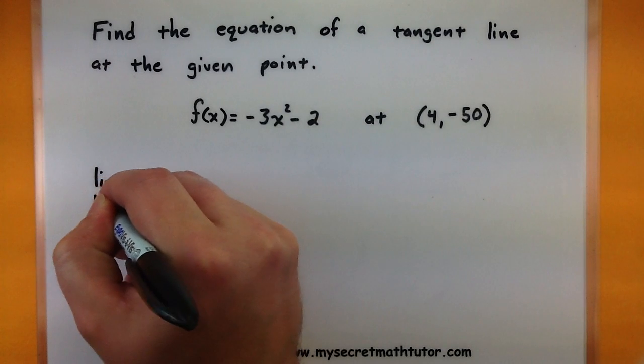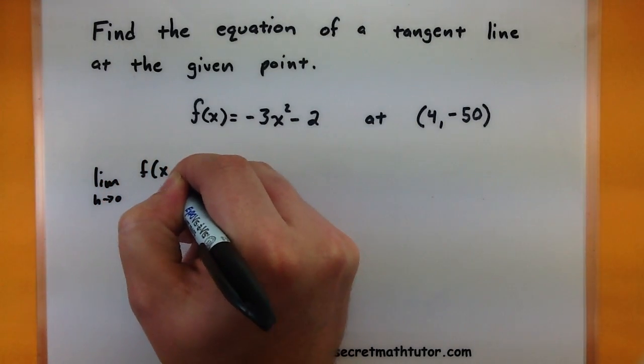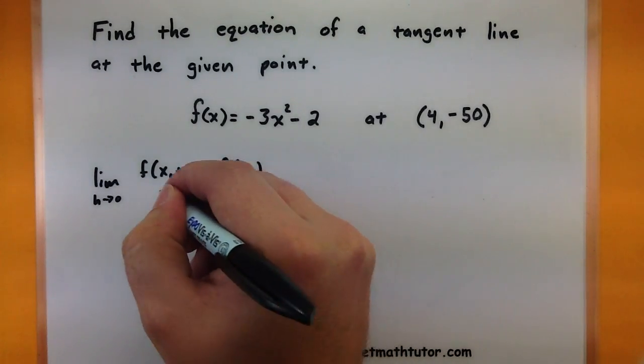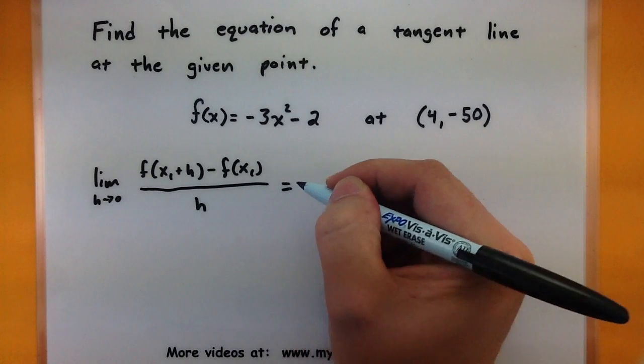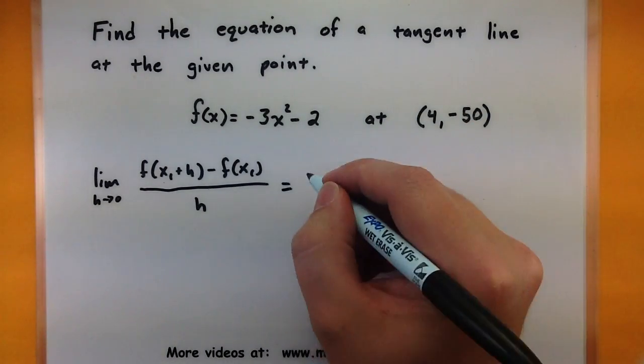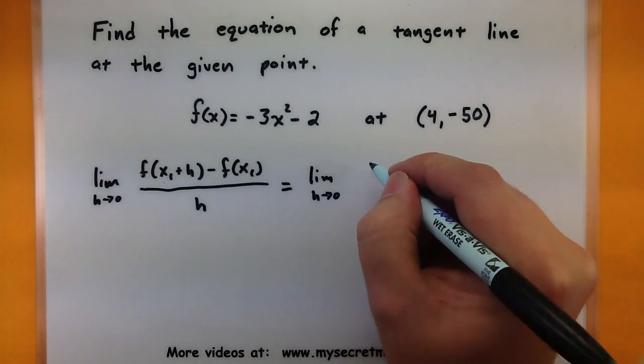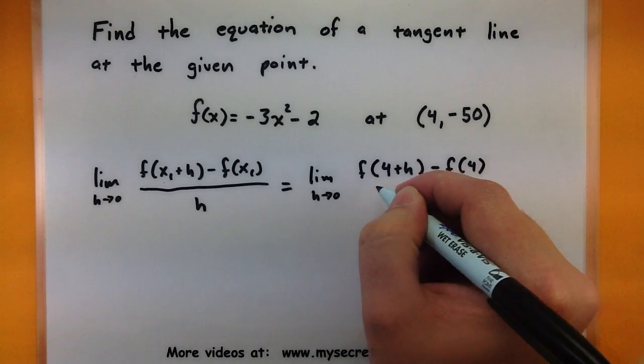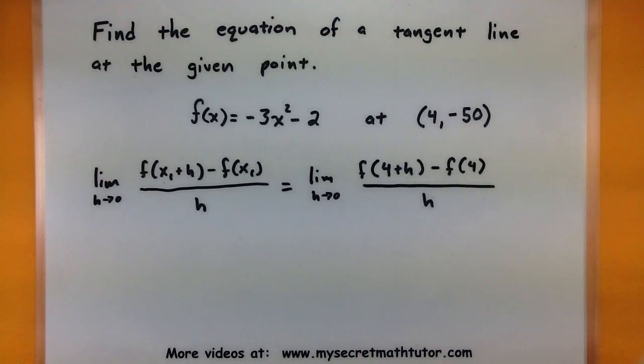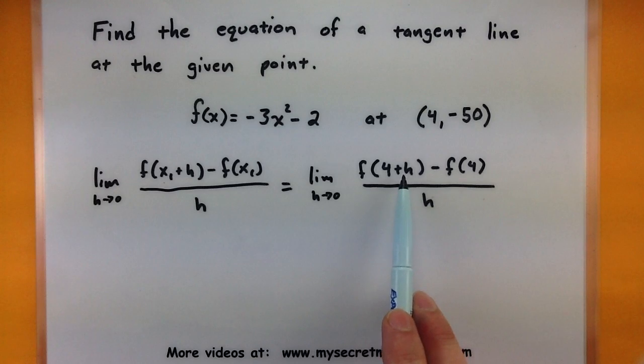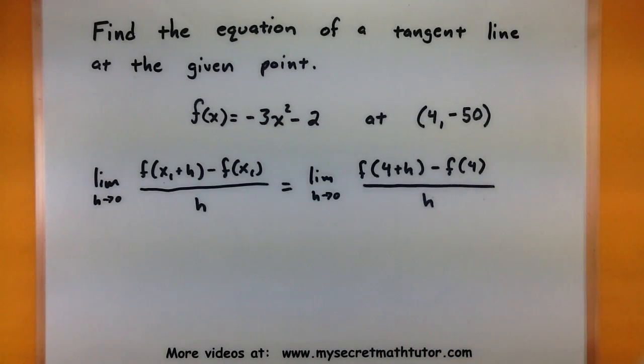So let's go ahead and just write it down. So we're looking for the limit as h approaches 0 of f(x₁ + h) - f(x₁) all over h. And like I had highlighted on the previous slide we want to substitute for this x₁ our value of 4 because that's the x we're using in our point. So the limit as h goes to 0 of f(4 + h) - f(4) all over h. And now we have to take all of this information and actually substitute it into our function or into our equation. So wherever we see an x we're going to replace it with a 4 + h and then we're going to do this again everywhere we see an x we're going to replace it with a 4.